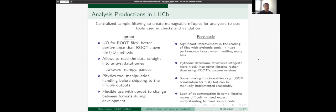Now I want to talk about the analysis productions within LHCb. This is a centralized sample filtering to create manageable n-tuples for analyzers to use. The Pythonic tools are used in the checks and validations of this process. First is Uproot, highlighted throughout this workshop, for I/O for root files. We see better performance than root's own file I/O methods, and it allows to read the data straight into arrays and data frames, which moves us to awkward, numpy, and pandas.